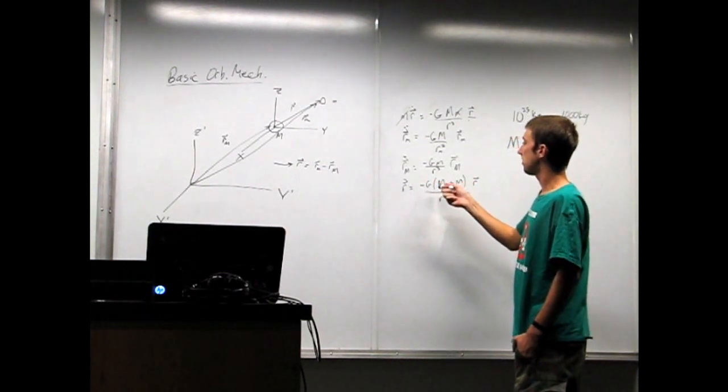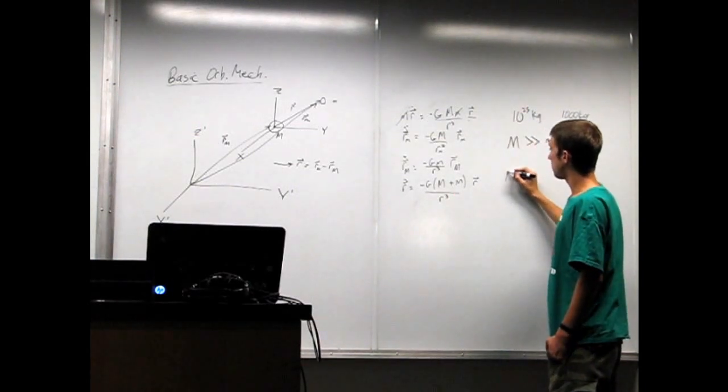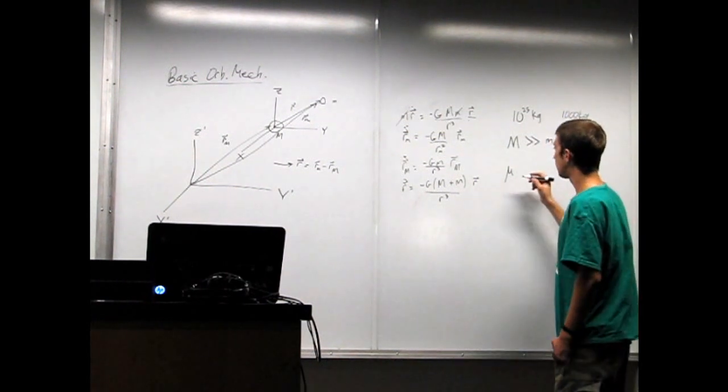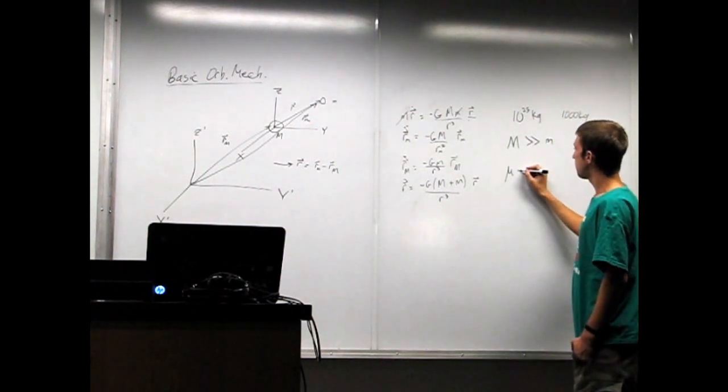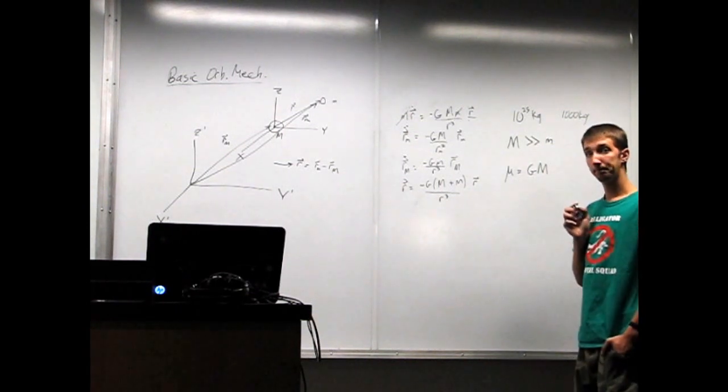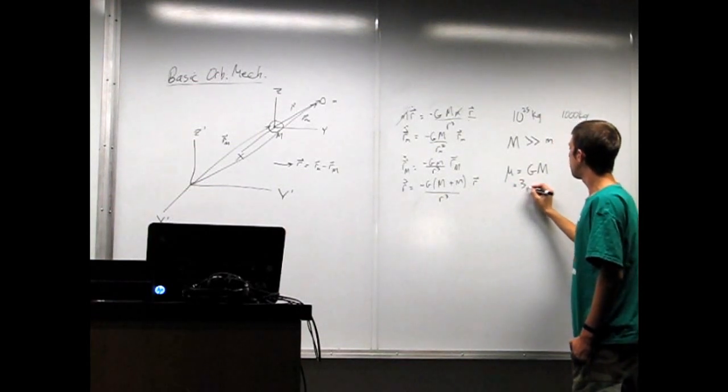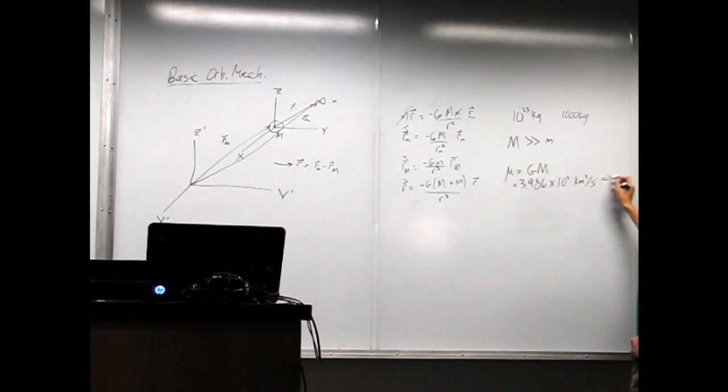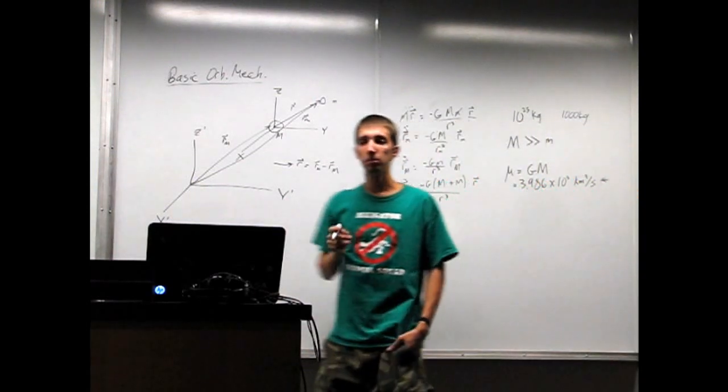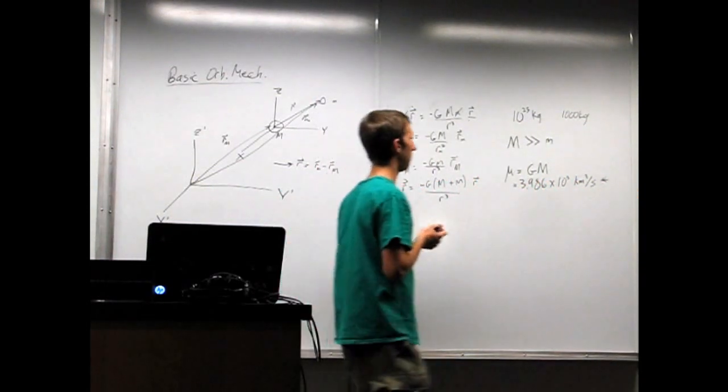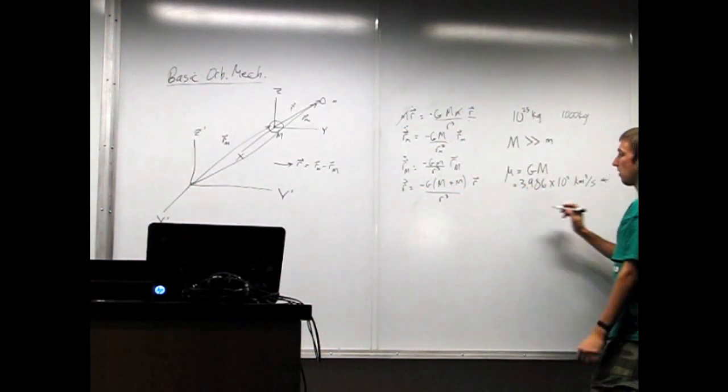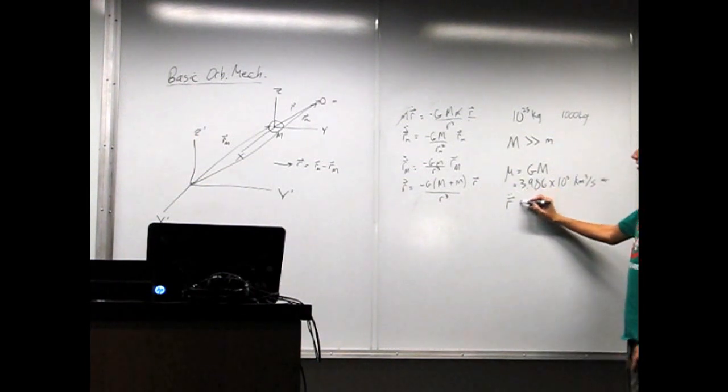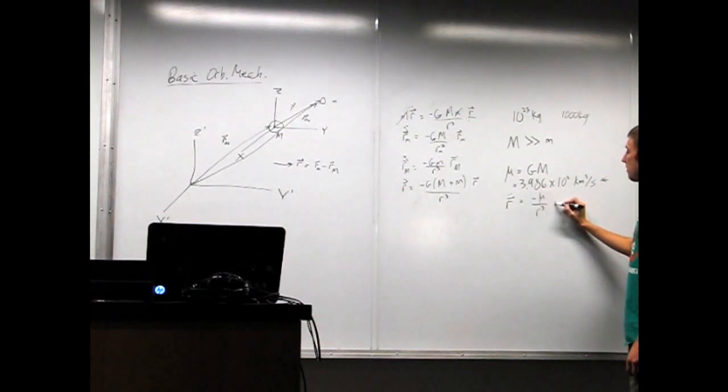So, if it's just g times M, we'll define this constant, and it's different for each planet that you're orbiting, or each star, called mu. And mu is equal to g times big M. And for Earth, this will be equal to 3.986 times 10 to the 5th power, kilometers cubed per second squared. And if you're going to be doing a lot of astrodynamics problems, that's a good number to memorize. It'll save you some time. Okay, so our final equation of motion is going to be R double dot equals minus mu over r cubed times the vector r.